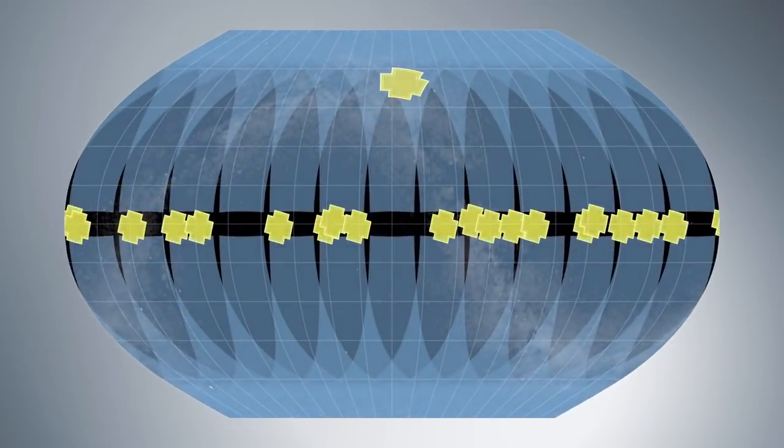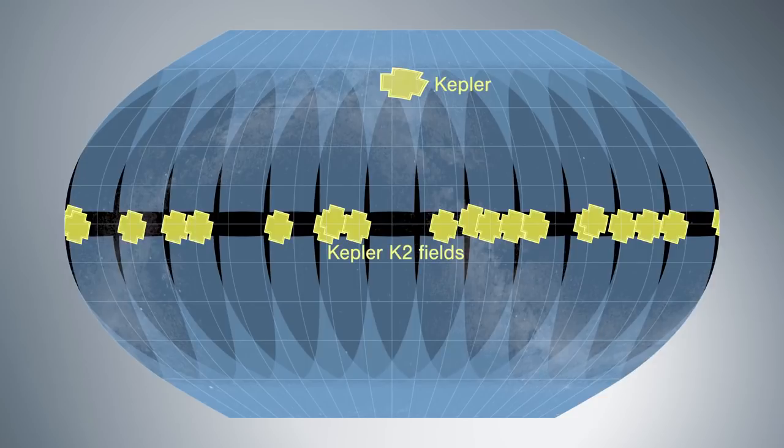TESS will study 85% of the sky, an area 350 times greater than what NASA's Kepler mission first observed, making TESS the first exoplanet mission to survey nearly the entire sky.